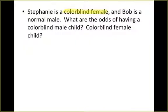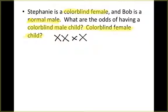Let's move on to another practice problem. Stephanie is a colorblind female and Bob is a normal male. What are the odds of having a colorblind male child, and a colorblind female child? We're breaking it down into male and female. A colorblind female must be recessive for both alleles — X^b X^b — and Bob, being normal, will be dominant — X^B Y.